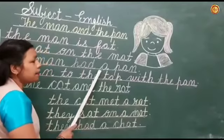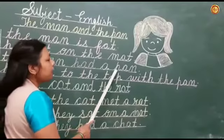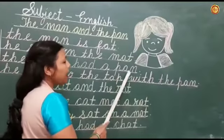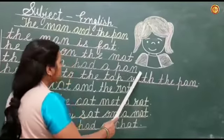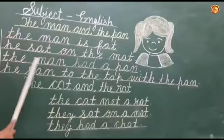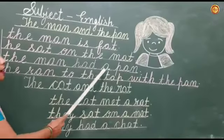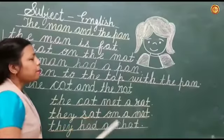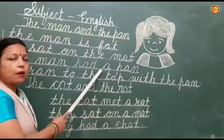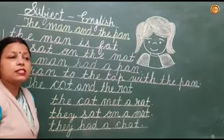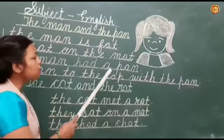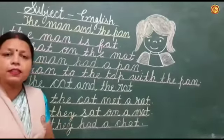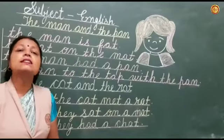So I will read it 'a'. P-A-N, pan. P-A-N, pan. Full stop. The man had a pan. Again, I am repeating: this A, we will read it 'a', because when A comes alone, then we will read it 'a', and when A comes alone, the sound of A is 'a'.